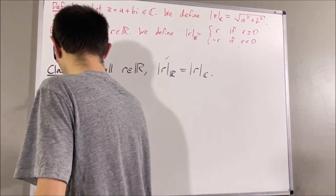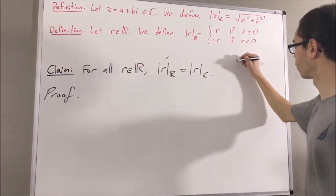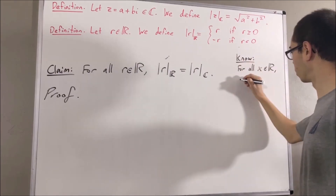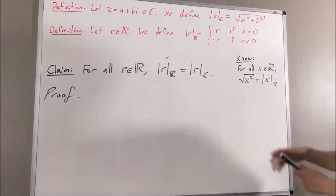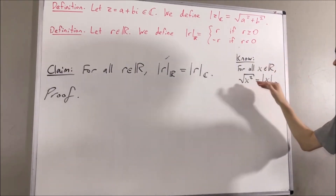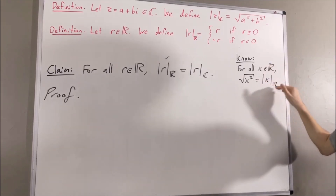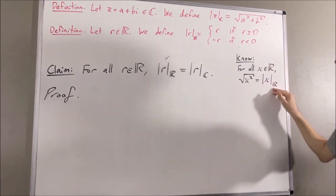We're going to use the following fact in our proof. For every real number x, the square root of x squared is equal to the absolute value of x in the real sense.